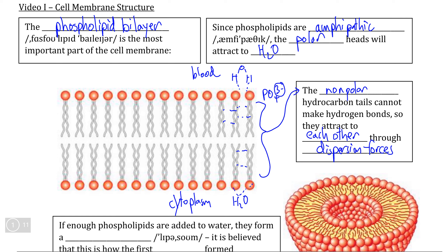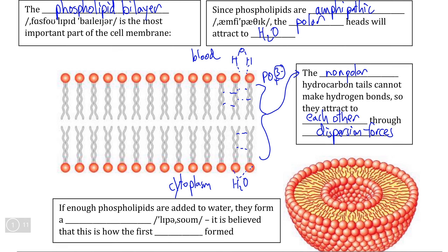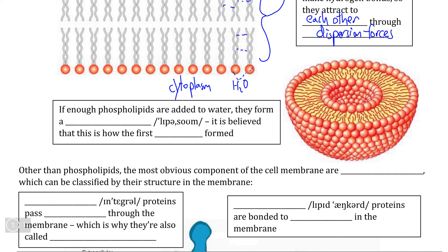If we want to get more complicated, the tails can also form dispersion force interactions with cholesterol molecules that stabilize the membrane, and with the non-polar parts of proteins embedded within the cell membrane. The phospholipid bilayer is also interesting from an evolutionary perspective, because if you had enough phospholipids by themselves and dropped them into water, they would naturally form a spherical phospholipid bilayer structure called a liposome. Biologists believe this was one of the most important steps in the formation of the first cells, as any living thing able to form such a bilayer would have a protective advantage.